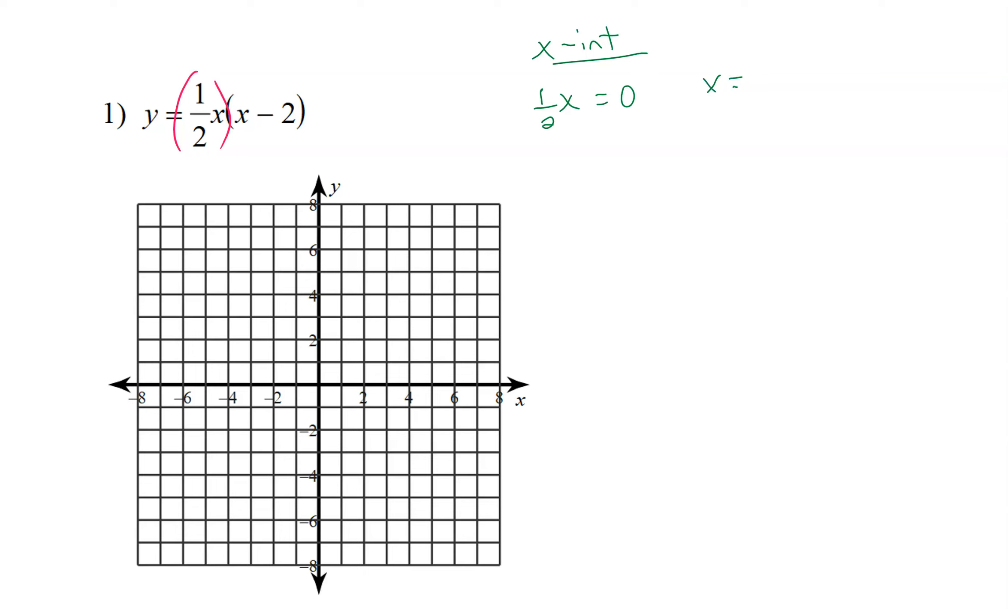For the first equation, we're going to divide by 1 half, and we get x is equal to 0 divided by 1 half, which is 0. So we know that one of our x-intercepts happens at (0, 0), and we can go ahead and plot that on the graph.